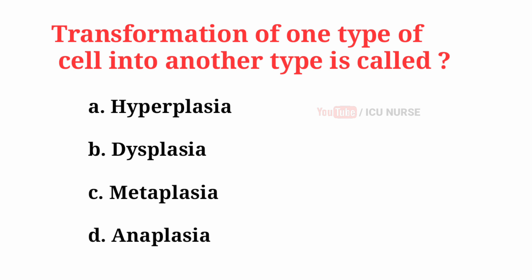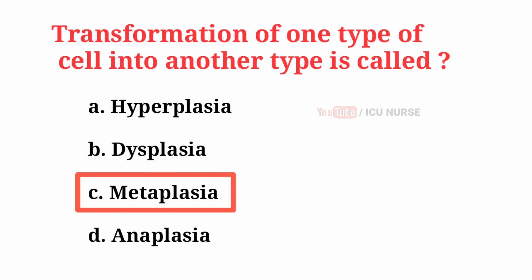Transformation of one type of cell into another type is called — the correct answer is C: Metaplasia.